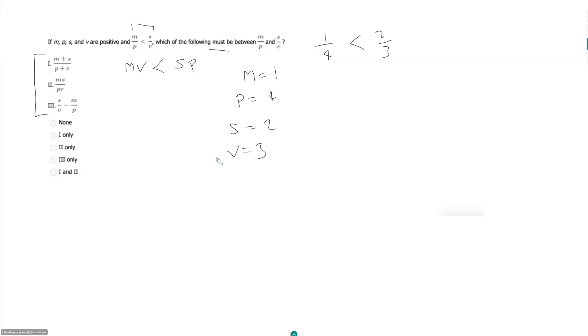So let's start with the first choice, m plus s over p plus v. Is that between 1 fourth and 2 thirds? So m plus s is going to be 1 plus 2, which is 3. p plus v is going to be 4 plus 3, which is 7. And it looks like 3 sevenths should be between 1 fourth and 2 thirds. So remember that means I can't necessarily select any of the options that have a 1 in them. So I want to test these for all my choices first.